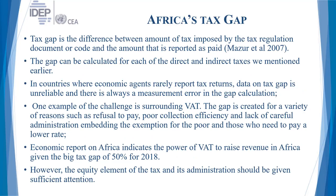I will introduce one important concept: the tax gap. The tax gap is the difference between the amount imposed by the tax regulation code and the amount reported as paid. When you have collection inefficiency, the gap will be wider. For example, if you are aiming to collect 2 billion US dollars this year and you collect only half a million, there is a huge gap. When there is inefficiency, this tax gap is usually wide, and Africa's tax gap is sometimes huge.